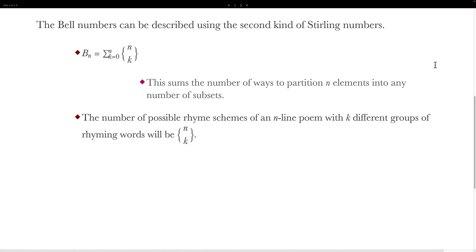Along with that, the Bell numbers can be described using the second kind of Stirling numbers. In particular, B_n equals the sum from k=0 to n of {n subset k}. This works because it sums the number of ways to partition n elements into any number of subsets. We can use this to update our property from the partitions video: the number of possible rhyme schemes of an n-line poem with k different rhyming groups will be {n subset k}.